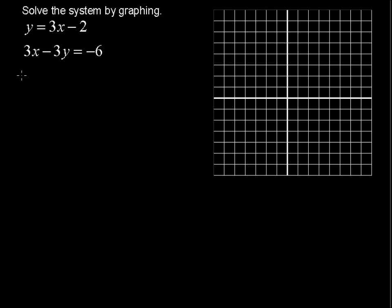Solve the system by graphing. y equals 3x minus 2, and 3x minus 3y equals negative 6.